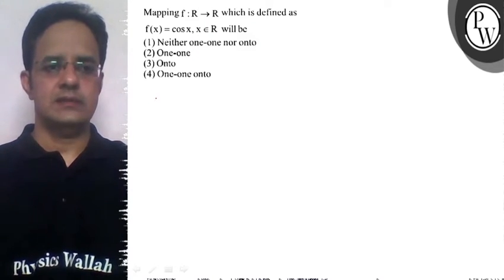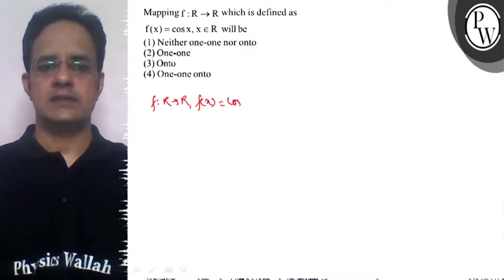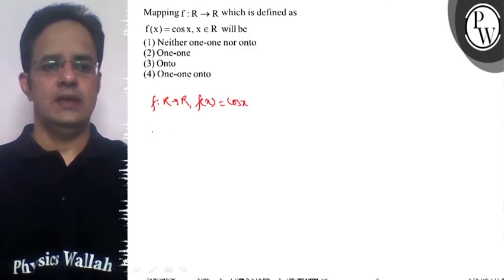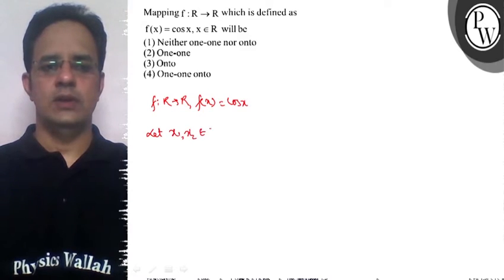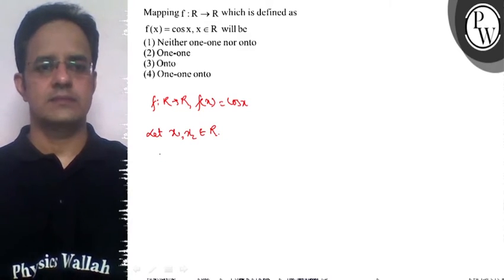So the function is defined as f from R to R, f(x) = cos x. Now let x1 and x2 belong to the domain of the function, say R, so f(x1) = f(x2).